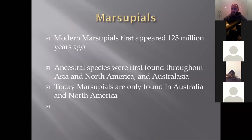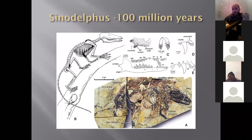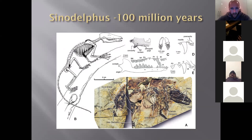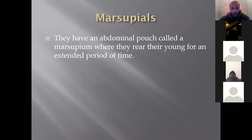Modern marsupials first started appearing around 125 million years ago during the time of the dinosaurs — small, arboreal, very rat-like in shape. Ancestral species were found throughout North America, Asia and Australasia; today's marsupials are only found in North and South America as well as Australia. The oldest marsupial fossil found is Sinodelphys, with records going back around 110 million years ago. It was a small rodent-like creature that lived in trees based on its shape. All modern marsupials have an abdominal pouch called a marsupium, where the very young are nursed for an extended period.